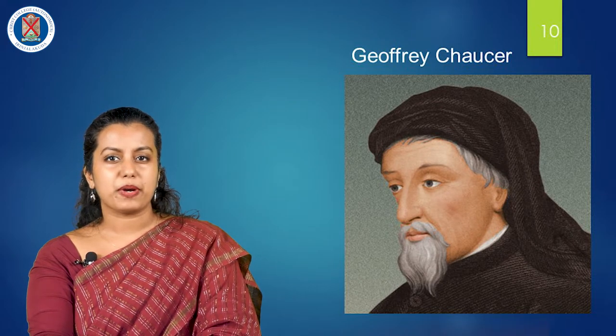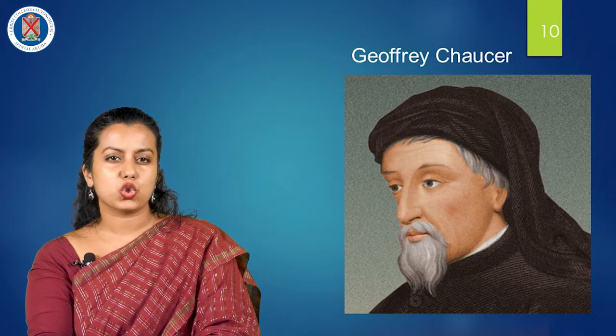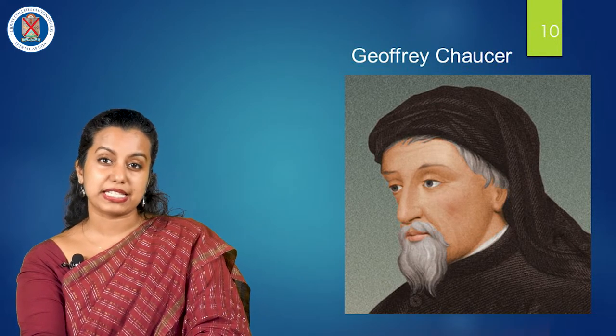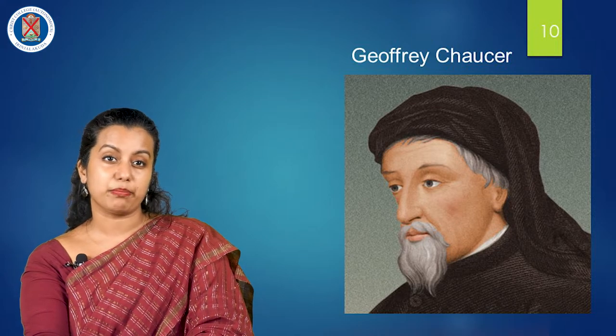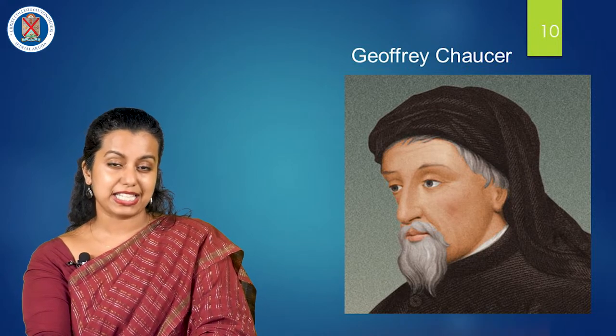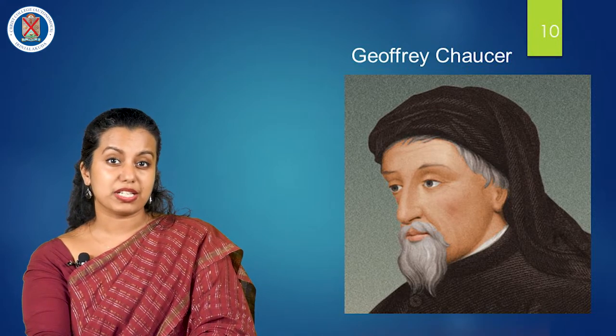When performed by students, schoolmasters claimed that translation and double translation facilitated eloquence in both languages. It is said that Queen Elizabeth I could translate religious texts from English into Latin, Italian, and French by the time she was of age 12.